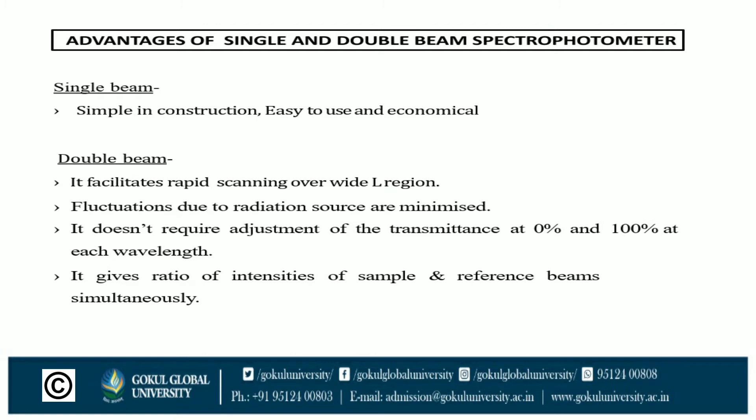The main advantage of the single beam spectrophotometer is that it is simple in construction, easy to use, and economical. In the double beam spectrophotometer, the advantage is rapid scanning, which saves time during practical or instrumentation work. It minimizes fluctuations due to the radiation source, such as noise, which occurs in the single beam spectrophotometer.